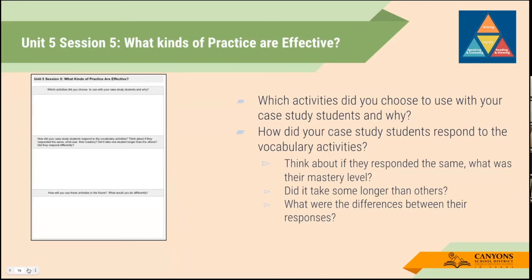Session 5 is reflecting on the last lesson — which activities did you choose and how did they work? Or you could choose to implement a couple of different ones, since this session also introduces additional vocabulary activities. Pick a couple of new vocabulary activities to do with your students, whole class or small group, and reflect on how they went and how your three kids responded. Did it take some students longer? Did some need more scaffolding? There are a lot of different activities in the book, and you could also find others that relate and try them out to see what works for each kid.